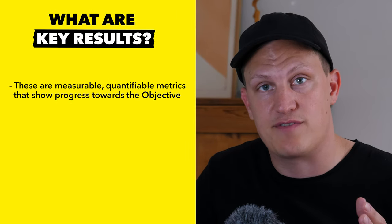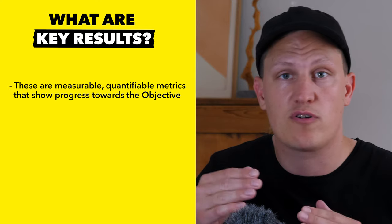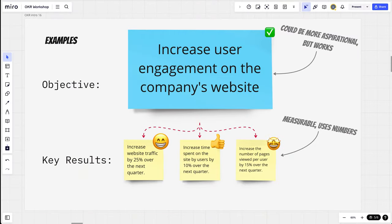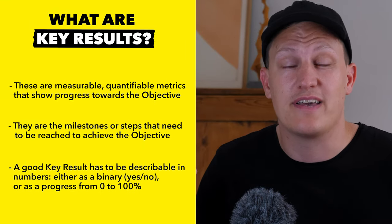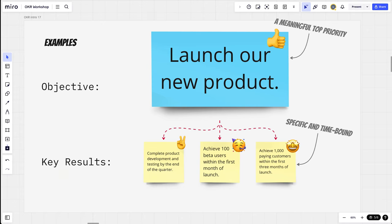Moving on to Key Results. These are the measurable, quantifiable metrics that show progress towards the objective. They are milestones or steps that need to be reached to achieve the objective. A good key result is describable in numbers, either as a binary yes or no, or as a progress from zero to 100%.